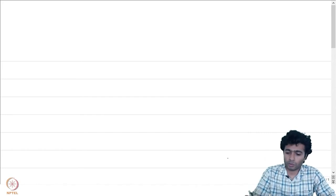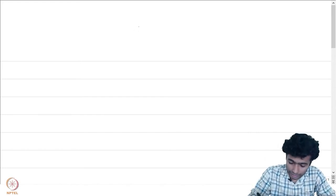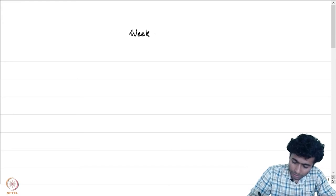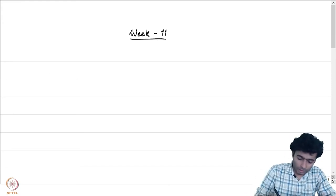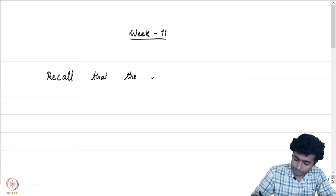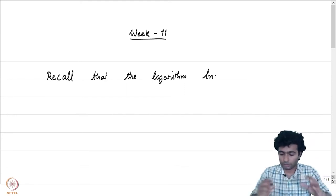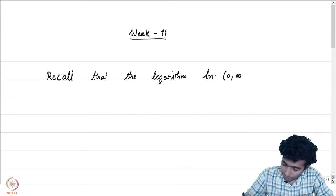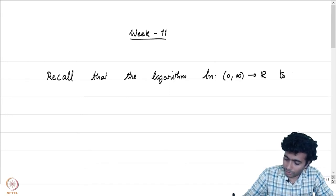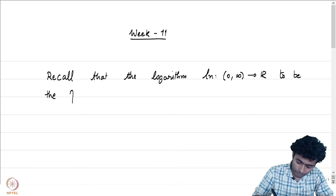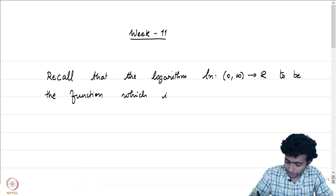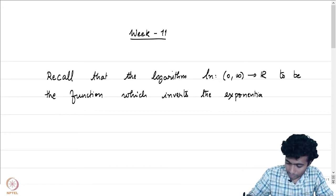Let me begin by recalling what the logarithm function was in the real setting. Recall that the logarithm ln, from (0, ∞) to ℝ, is the function which inverts the exponential function on ℝ.